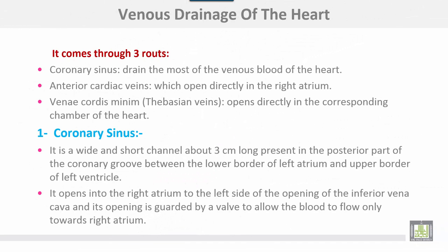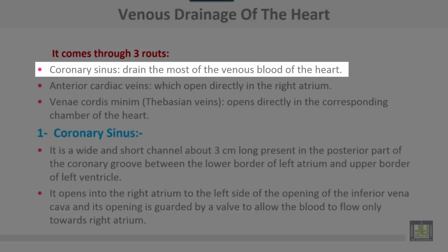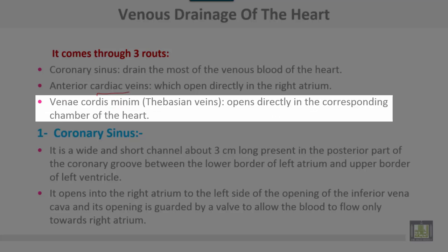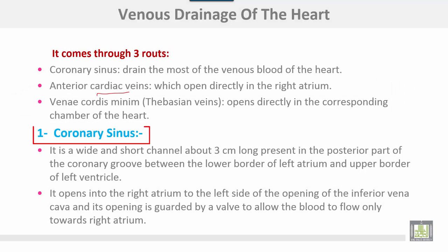The venous drainage of the heart comes through three routes. Number one, and the most important, is the coronary sinus, which drains most of the venous blood from the heart. Number two, the anterior cardiac veins, which open directly into the right atrium. Number three, the venae cordis minimae or Thebesian veins, which open directly into the corresponding chamber of the heart.